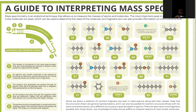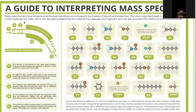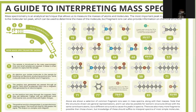A guide to interpreting mass spectra: a mass spectrometer is an analytical technique that allows us to measure the masses of atoms and molecules. The most important peak in a mass spectrum is the molecular ion peak, which can be used to determine the mass of the molecule. Fragment ions can also provide information on chemical structure.